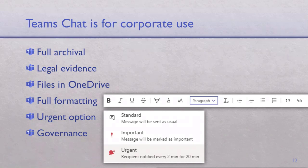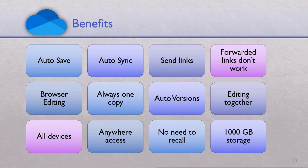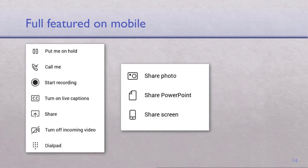Bottom line: although chat is chat, it's designed more for corporate governance-based chat rather than personal chat. By all means use whichever depending on the context. Files shared on Teams chat automatically go to OneDrive, and all the benefits of OneDrive automatically accrue. No other chat gives you these benefits because there is no integrated cloud file system behind it. You can share a full PowerPoint presentation from mobile, and you can even share your screen from a mobile — so as a presenter you can manage the show purely from a mobile phone.